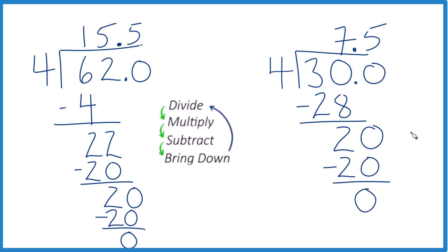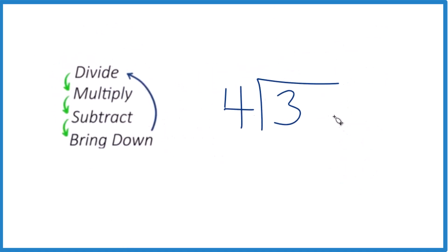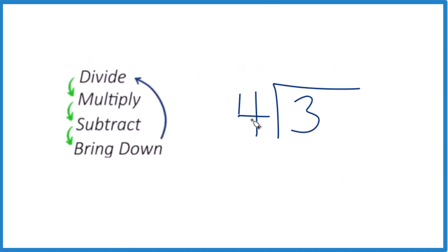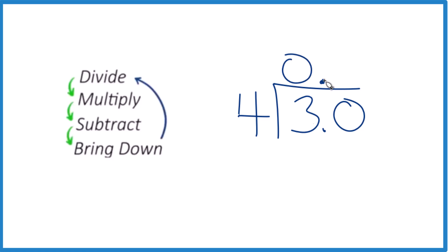And you're done. It's that same process: divide, multiply, subtract, bring down, and do it again. Let's try one that gives us some decimals here. 4 doesn't go into 3, so let's put a decimal point here and put a 0. Let's put a decimal point up here, and we'll put a 0 in front so we don't forget that's here.